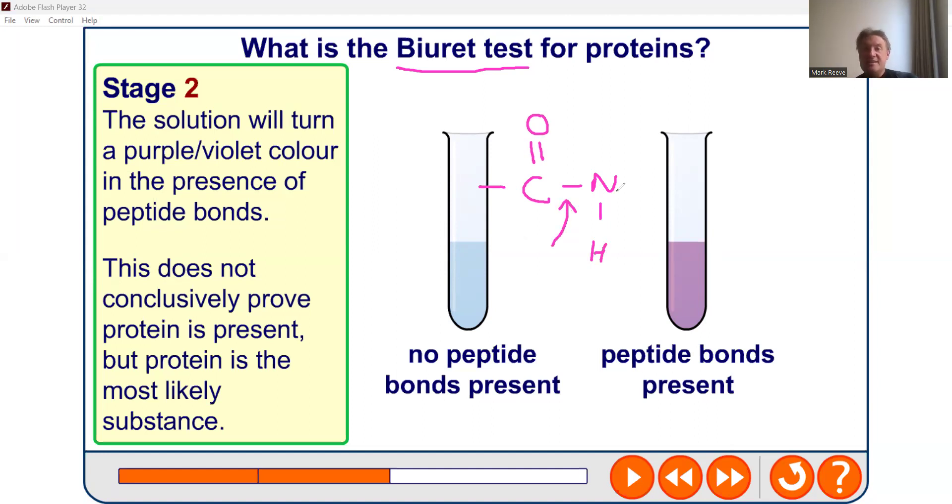Now there are other substances that can also produce that color that contain peptide bonds, but mostly these are proteins. It is worth saying that amino acids will not give you that same positive test result, so it has to be actually formed as a polypeptide or a protein.